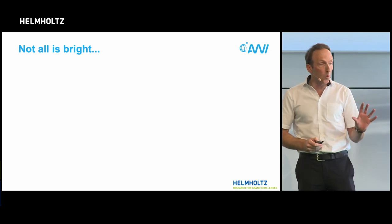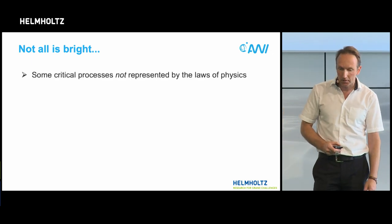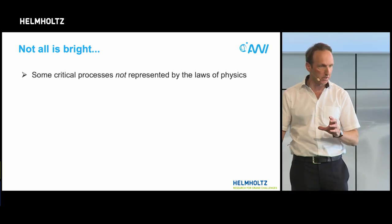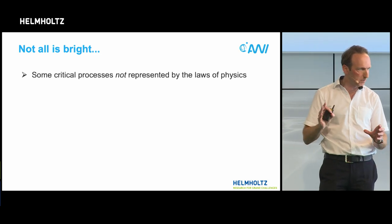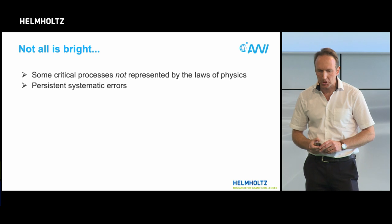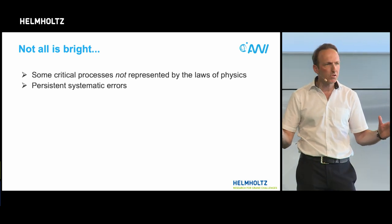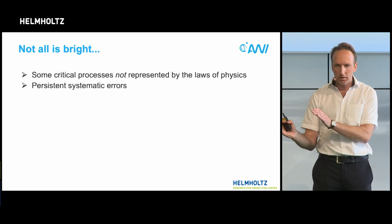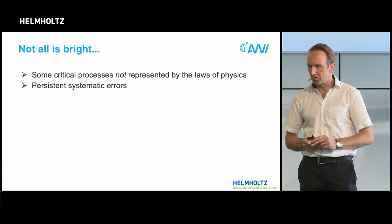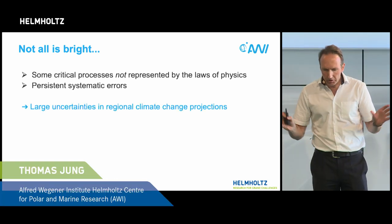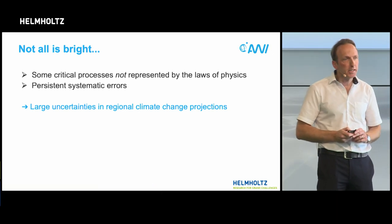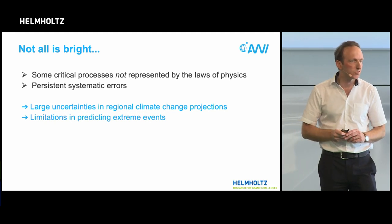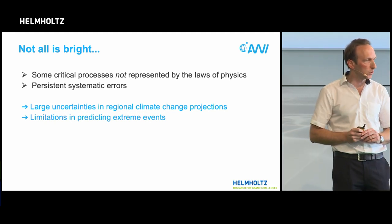But not all is bright; there is scope for improvement. I would argue that some critical processes are not yet represented in the models by the laws of physics as we would like, but instead by empirical representations. There are persistent systematic errors — some larger than the signal you want to predict — and in nonlinear systems, that is cause for concern. These all result in large uncertainties in regional climate change projections and also limitations in our ability to predict extreme events, which is of extreme importance to society.